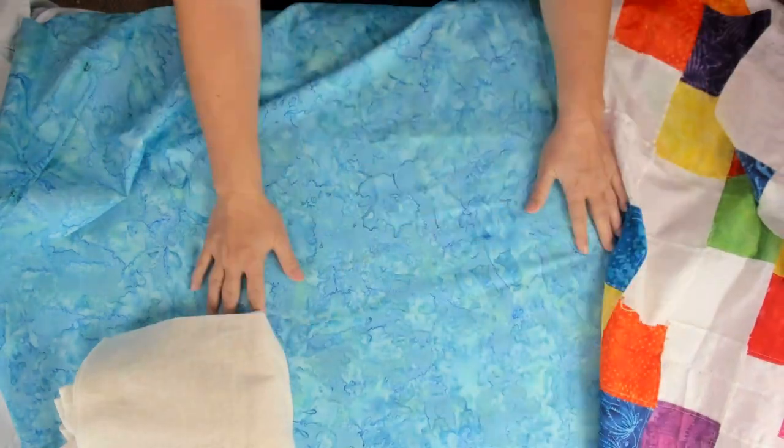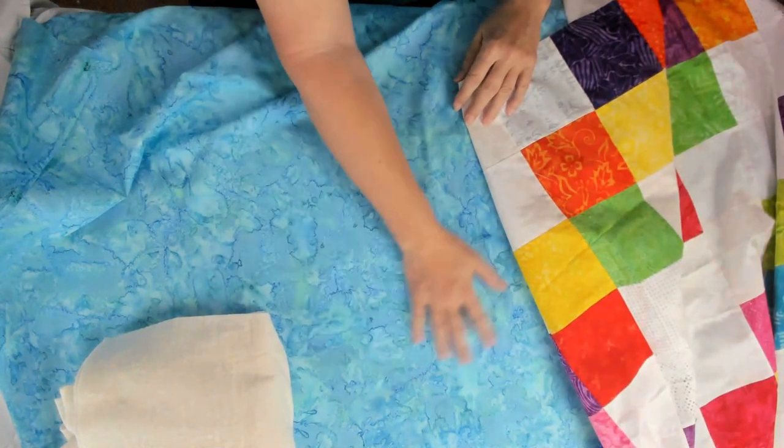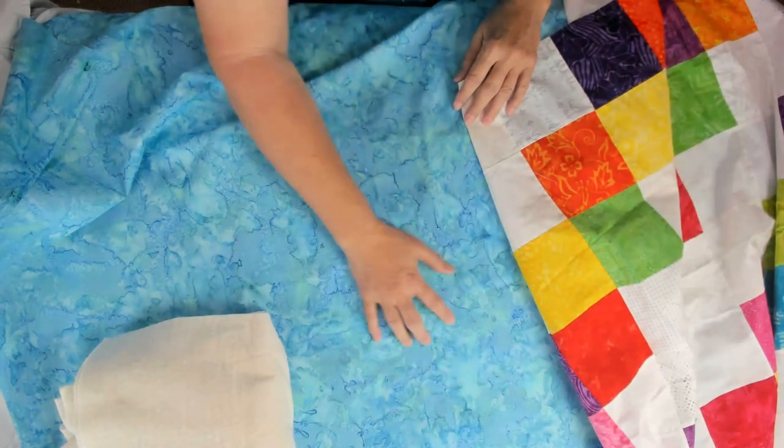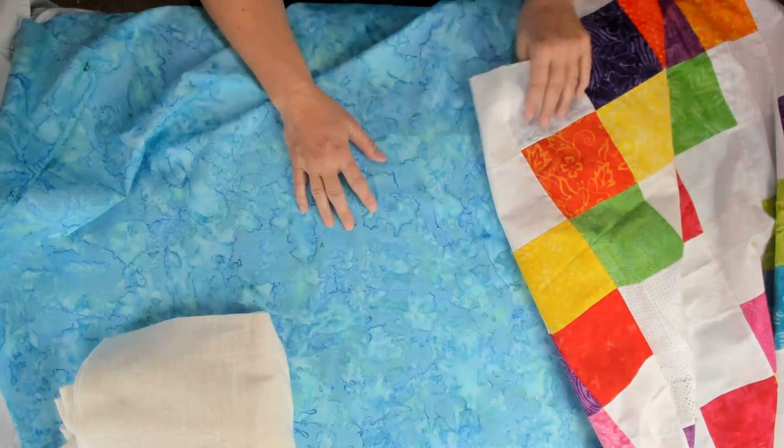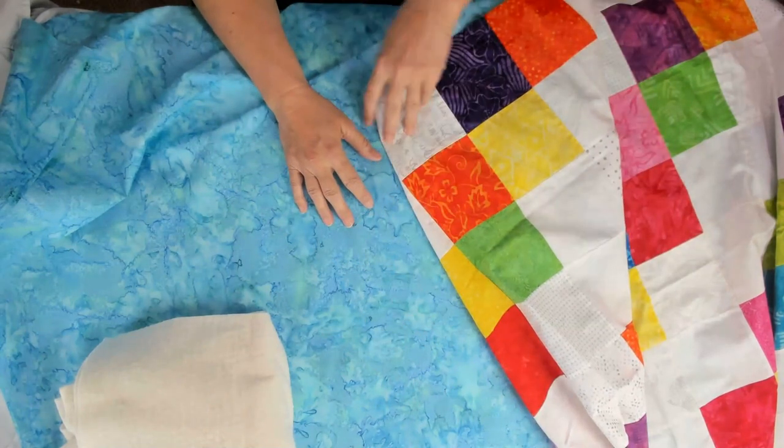Here's my quilt backing. I think that's just such a pretty color. Look at that - the turquoise, the blues, the aquas. I just think it's going to be pretty especially with all these colors. It'll be great. And then I have my quilt batting.